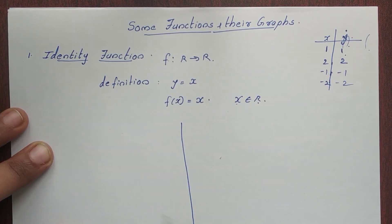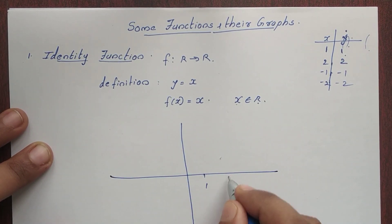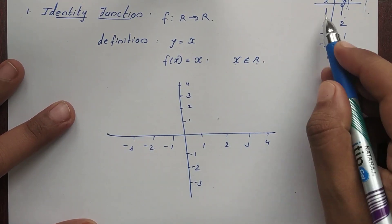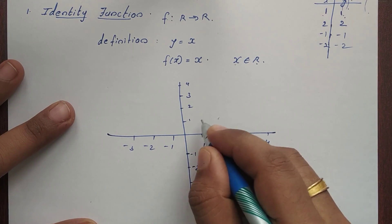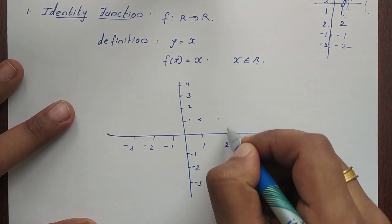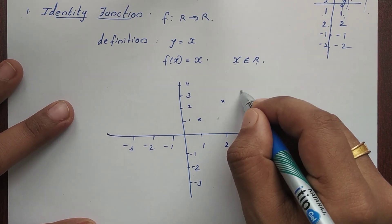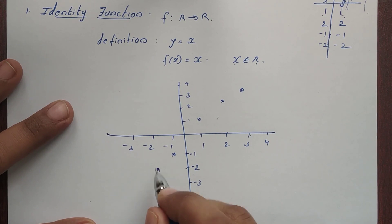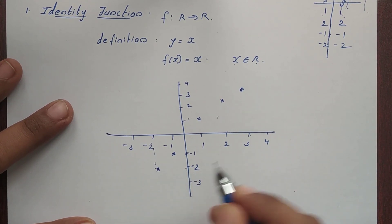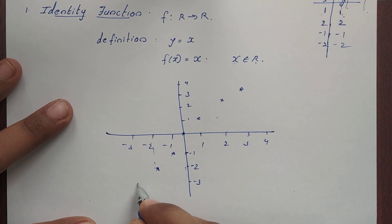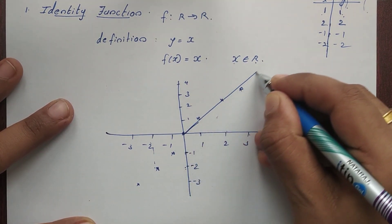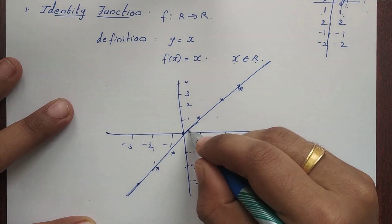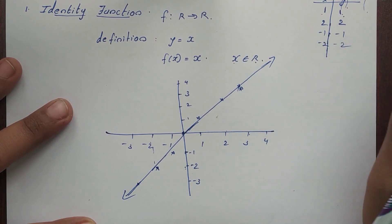Let's plot the graph. So: 1 equals 1, 2 equals 2, 3 equals 3. And minus 1 equals minus 1, minus 2 equals minus 2. This is a straight line passing through the origin. That's why y equals x.